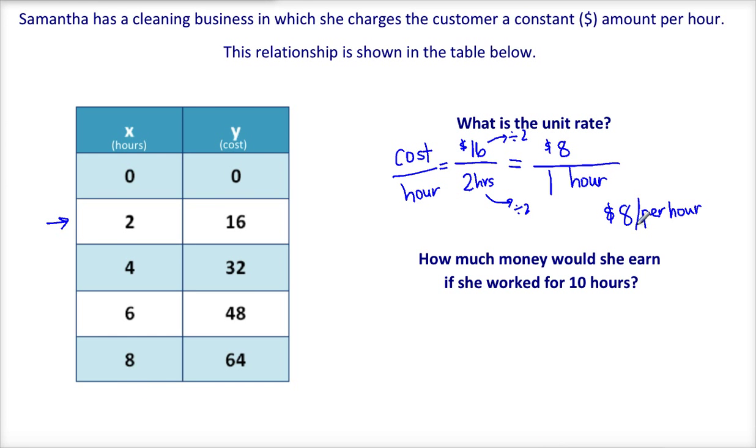So we're going to have to use their unit rate to help us figure it out. So remember, our ratio is cost over hours. And we know the unit rate is eight dollars per one hour. So how do we get up to ten hours?